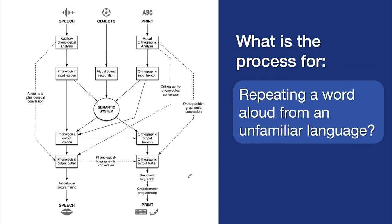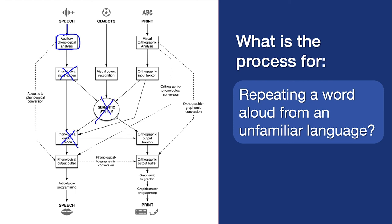What happens when you repeat aloud a word from an unfamiliar language? If we ask you to repeat the Russian word 'malako', you can say that exactly the same. Repeating a word from an unfamiliar language is an example of an unknown word — presumably you haven't heard it before and haven't said it before, so it's not in your lexicons and you don't know what it means. The process is: we recognize the phonemes, we convert those into phonological phonemes to be pronounced, we assemble that into a motor plan, and then we say it.